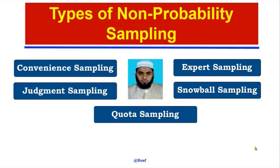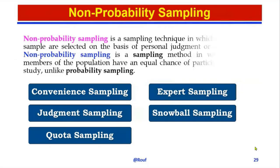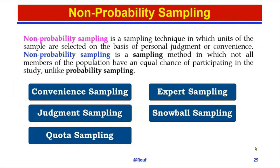Welcome to this class on types of non-probability sampling. Here we discuss the different types of non-probability sampling: convenience sampling, judgmental sampling, quota sampling, expert sampling, and snowball sampling. Non-probability sampling is a sampling technique in which units of the sample are selected on the basis of personal judgment or convenience.